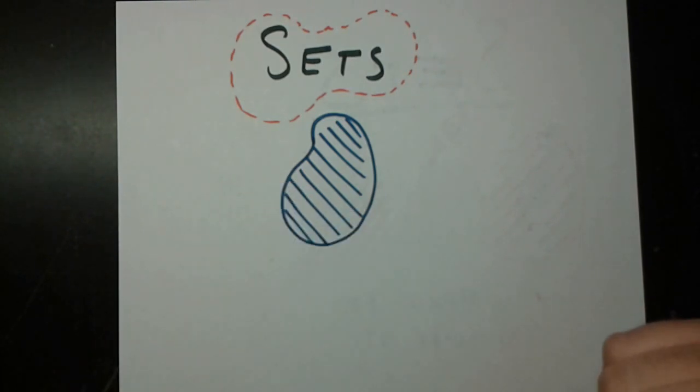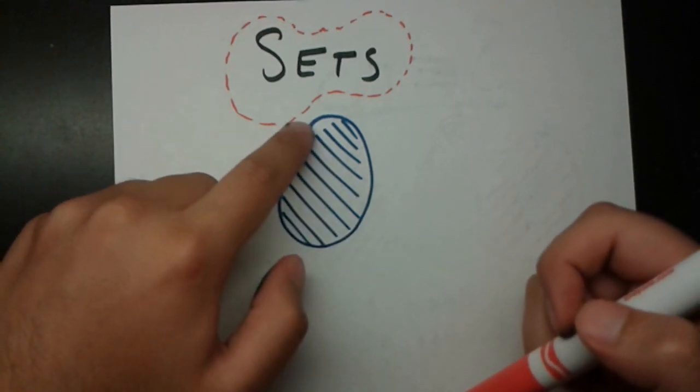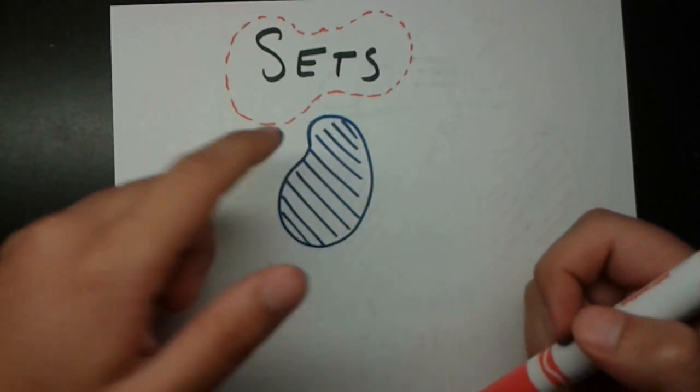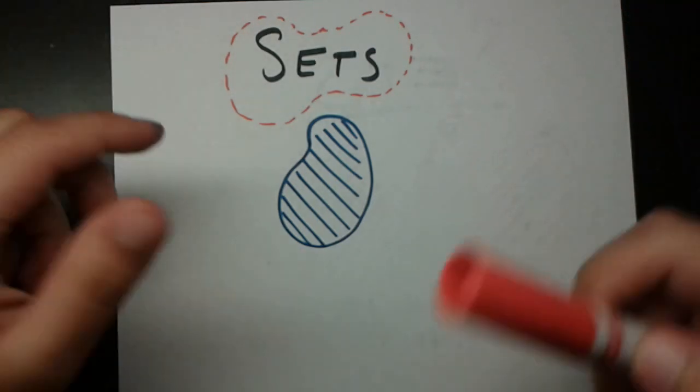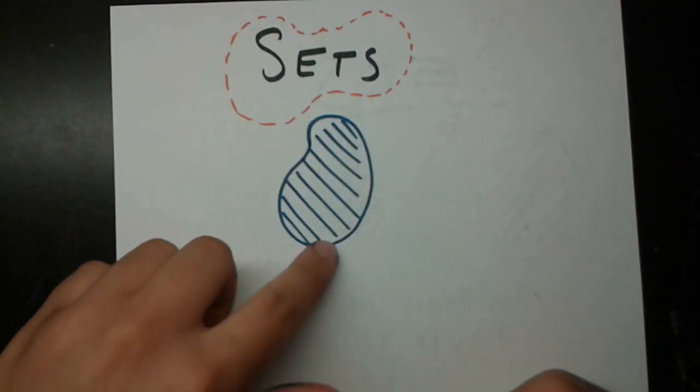So here I've drawn a set, and this set is consisting of this boundary, and this boundary is a technical term which we'll learn the exact definition of in a second, and it contains everything inside the boundary as well.